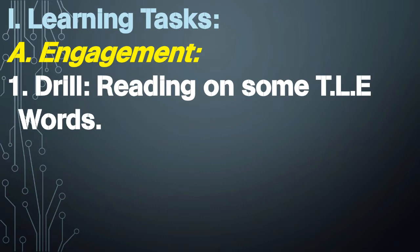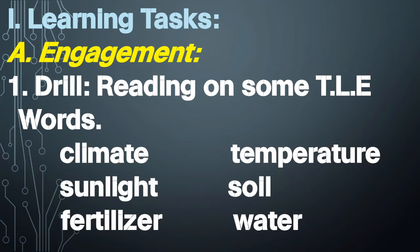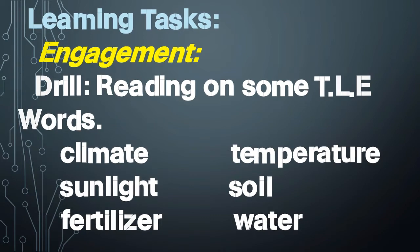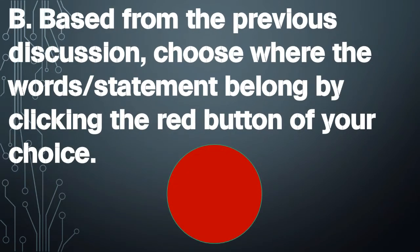Engagement drill — key terms: climate, temperature, sunlight, soil, fertilizer, water. Review activity: In groups of two, pupils shall give the importance and benefits of planting trees and fruit-bearing trees. They will be given strips of cartolina to write their answers. The group with the most correct answers wins. Based on the previous discussion, choose where each word or statement belongs by clicking the red button.